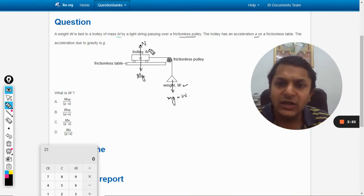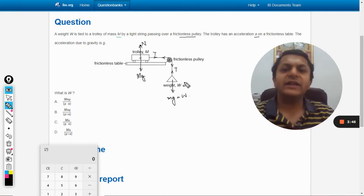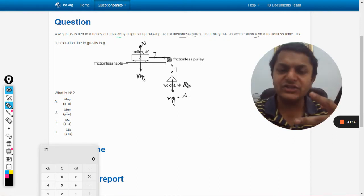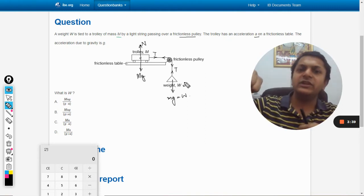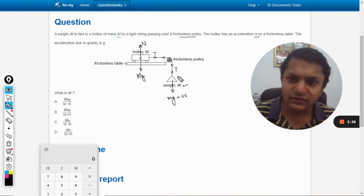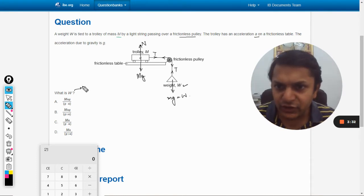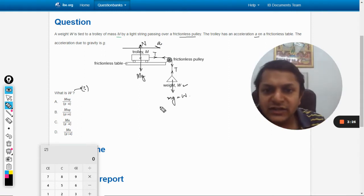There will be tension in the string. Tension is always shown with two directions because we are pulling it from both sides. Now we need to find weight W, and the acceleration of this is given that it is getting accelerated by a. So let us draw the free body diagram of this trolley.